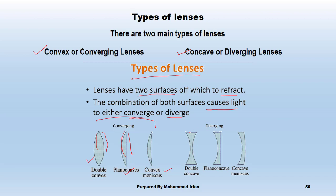Diverging lenses are again of three types. First is double concave — both sides are curved. Second is planoconcave — one side is plane, the other side is curved. Third is concave meniscus — both sides are curved.